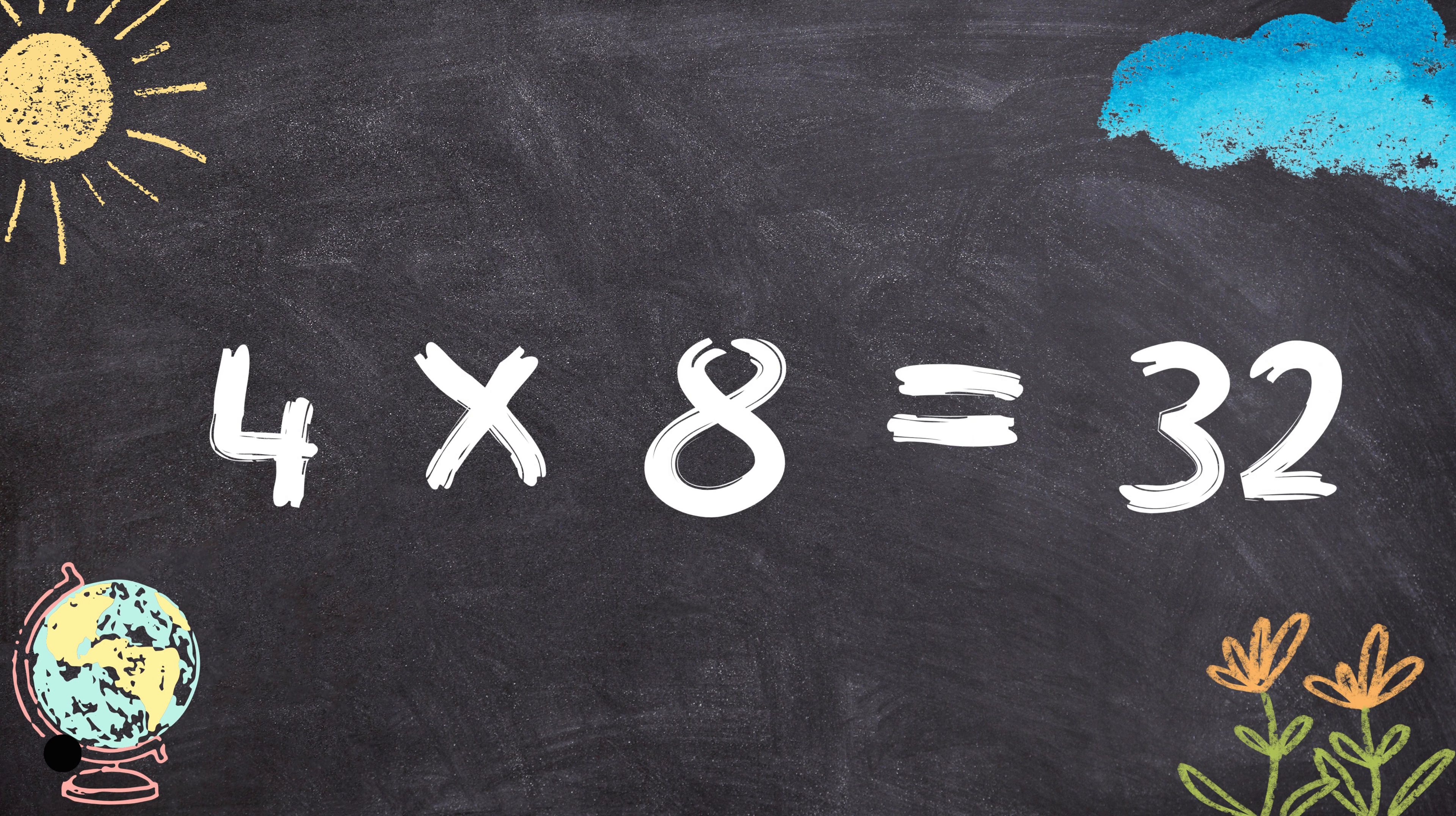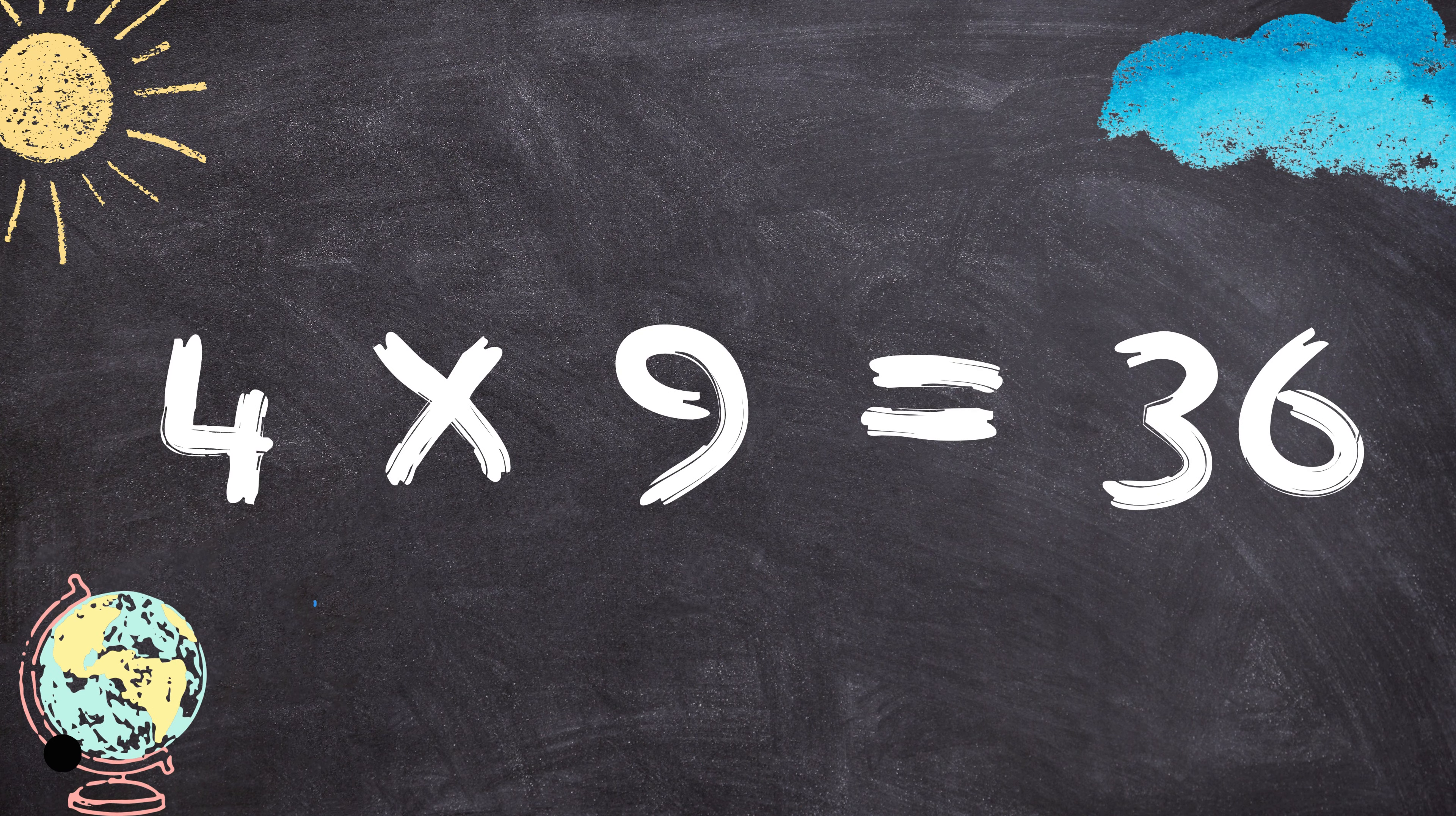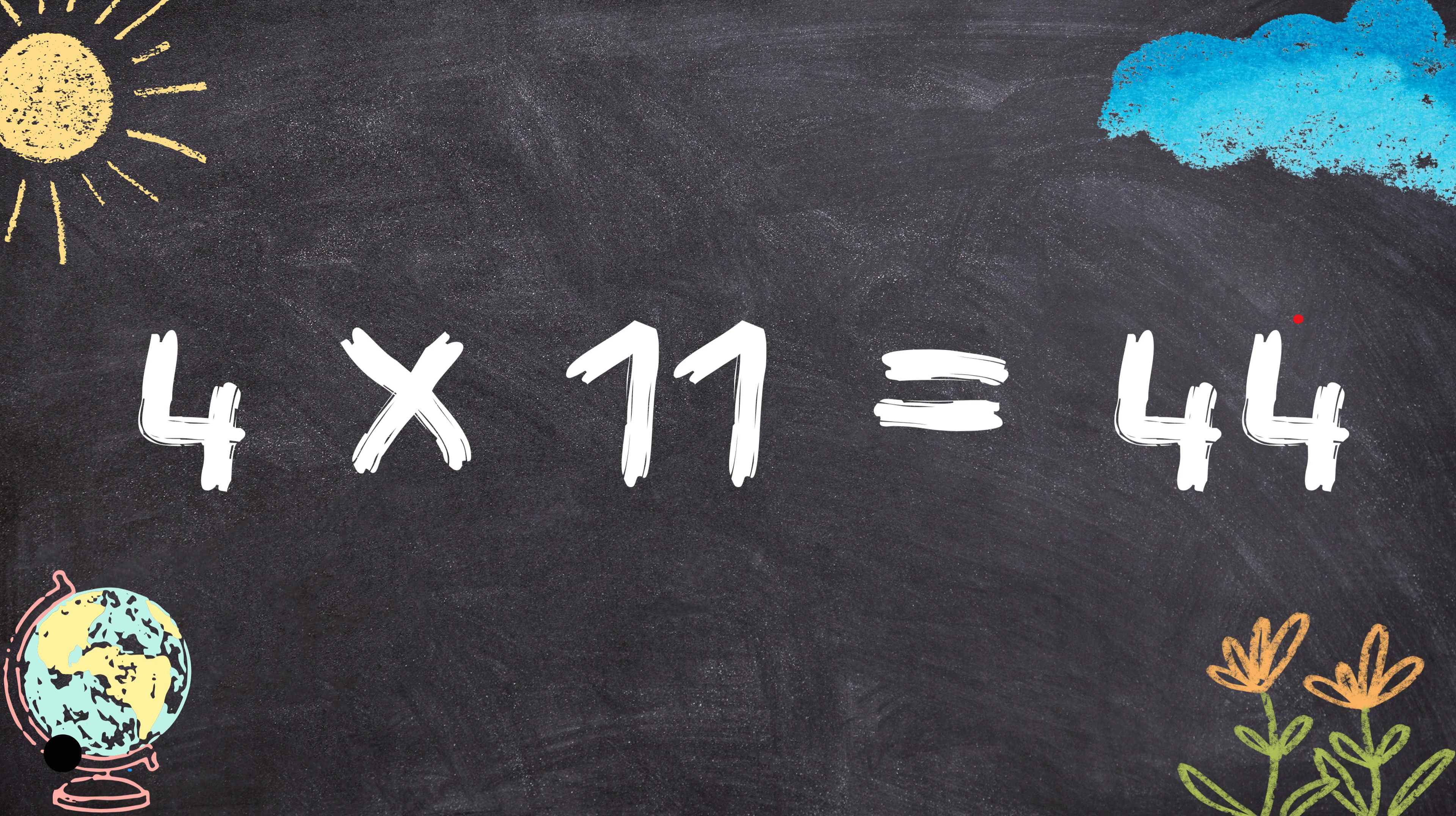4 times 8 equals 32. 4 times 9 equals 36. 4 times 10 equals 40. 4 times 11 equals 44.